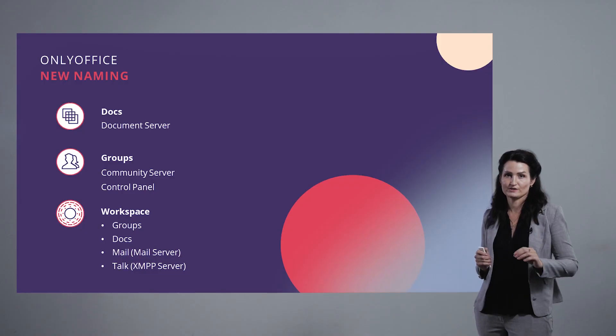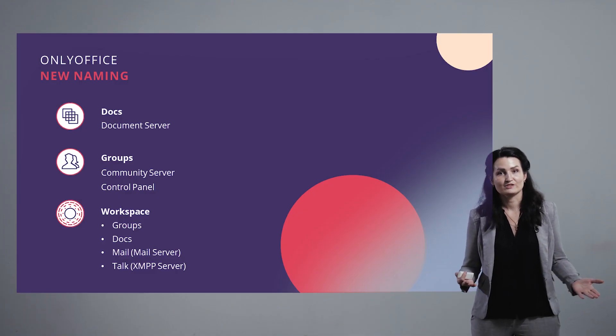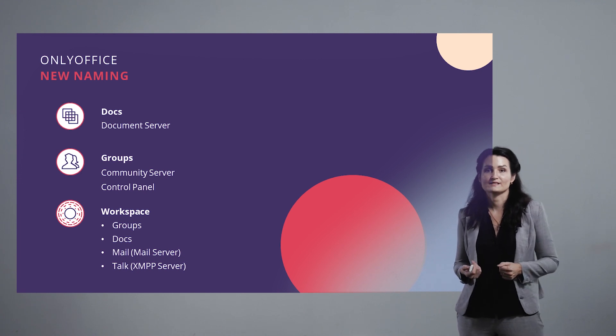After that, we decided to finally get rid of the long heavy names for our products and simplify them. The document server was renamed to Docs. The community server together with the control panel were renamed to Groups, because the central idea of the collaboration platform is to enhance work between people through document sharing, project management, CRM, calendar, etc. We have also changed the name of mail server to simply Mail, and Talk was chosen as the name for our XMPP server.